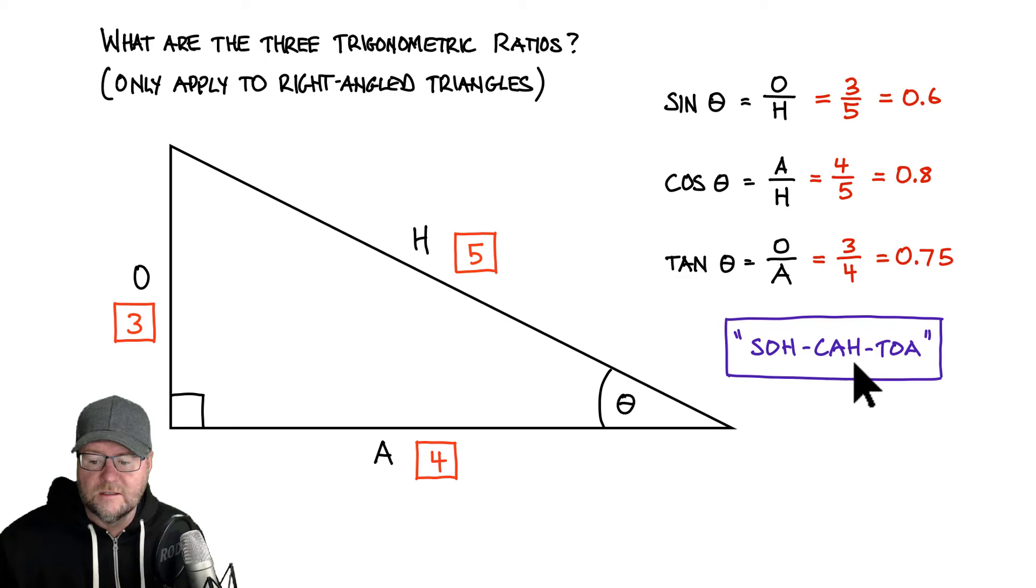The first letter in each of these little sections stands for the ratio. So this stands for sine, cos and tan. And if you have a look, the next two letters are this part. So sine is opposite over hypotenuse. Cos is adjacent over hypotenuse. And finally, tan is opposite over adjacent. A nice little phrase if you can just memorize SOH-CAH-TOA and that way you can always remember